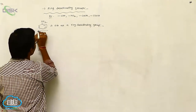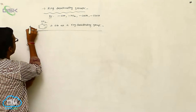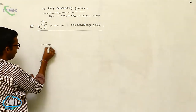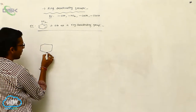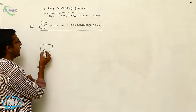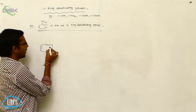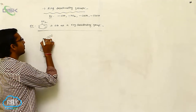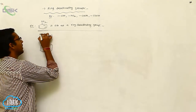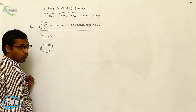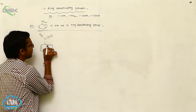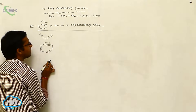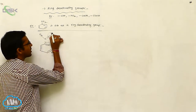Now I am representing the resonating structures of nitrobenzene. This is your nitro group, which contains a covalent bond — a coordinate covalent bond. This pi bond, whenever this pi bond is shifted to here, and then this pi bond is shifted towards the oxygen.